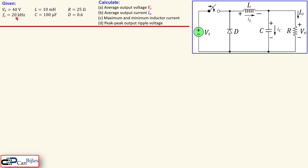We know that Vs is 40 volts and we have a switching frequency of 20 kilohertz — that means this switch will be switched at a frequency of 20 kHz. We have an L and a C, the resistor is 25 ohms, and D here is our duty cycle.